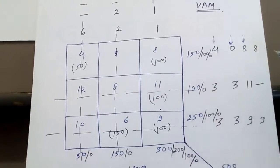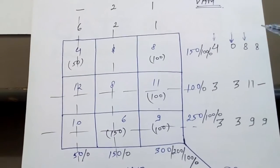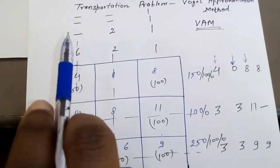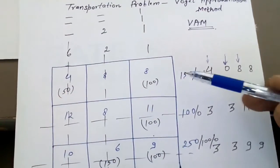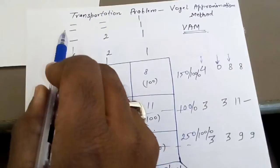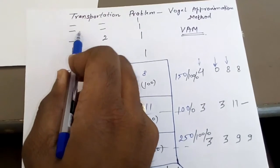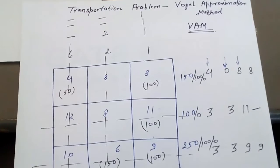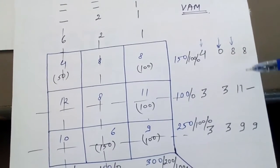The maximum penalty is 11, so allocate in that cell. The demand is 100 but supply is 300, so write 100 here, put 0, cross out this row, and 200 supply remains.